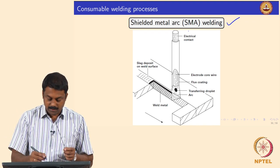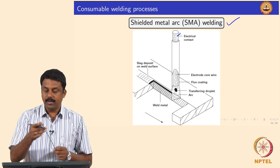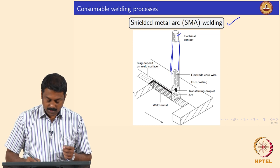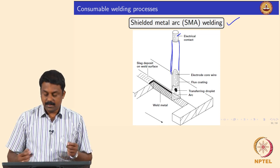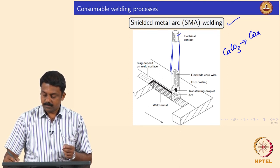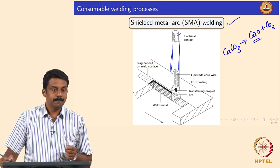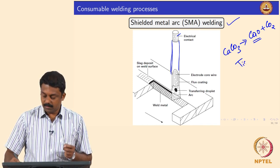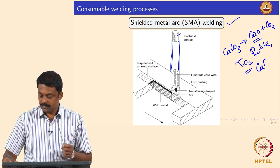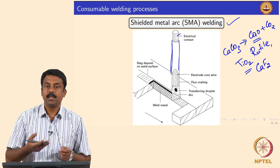The electrode has a metal wire core with a flux coat on top. These fluxes burn — in most cases they contain calcium carbonate, which burns into CaO and CO₂, forming the oxide slag. The flux may also contain titanium (rutile) or calcium fluoride, and we can also add alloying elements in the flux.